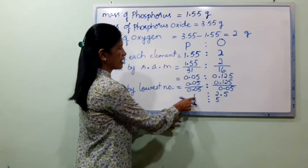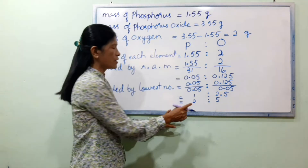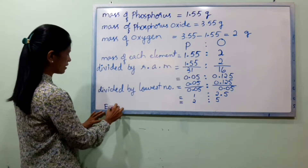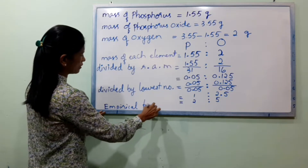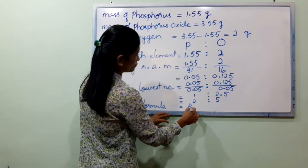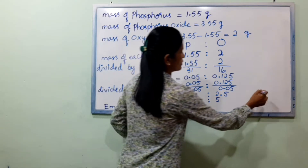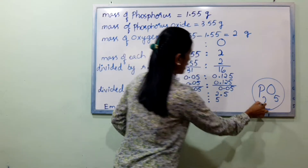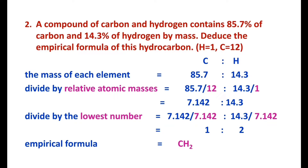Since we have 2.5, we need to multiply to get whole numbers. So the empirical formula is P₂O₅.